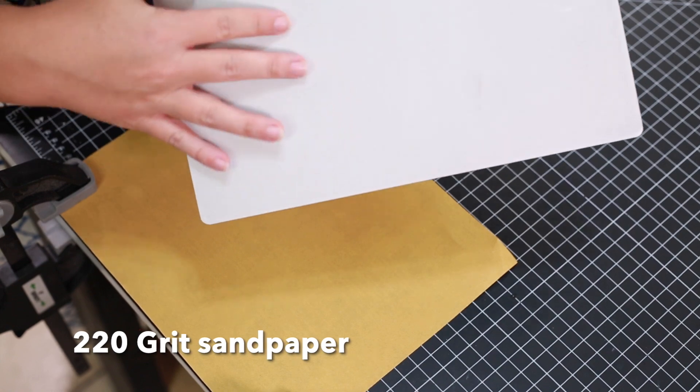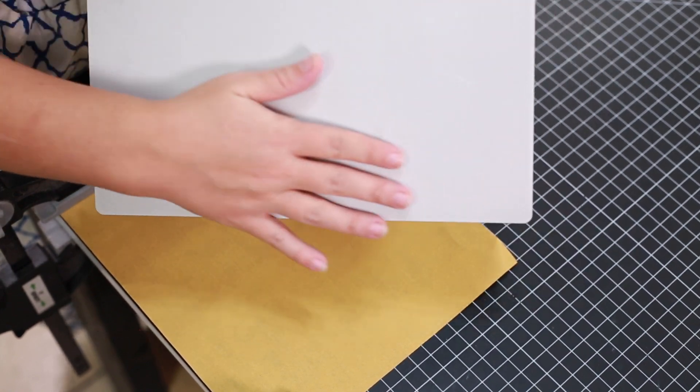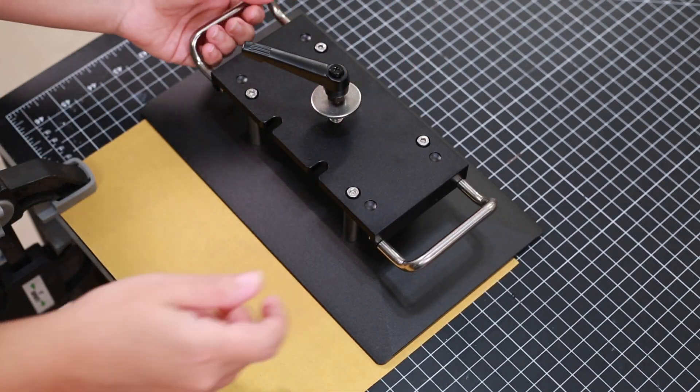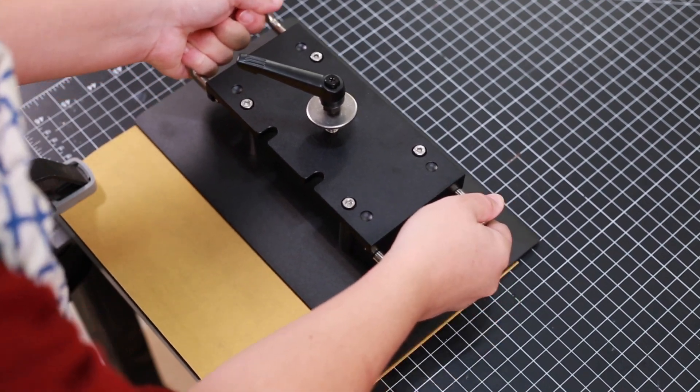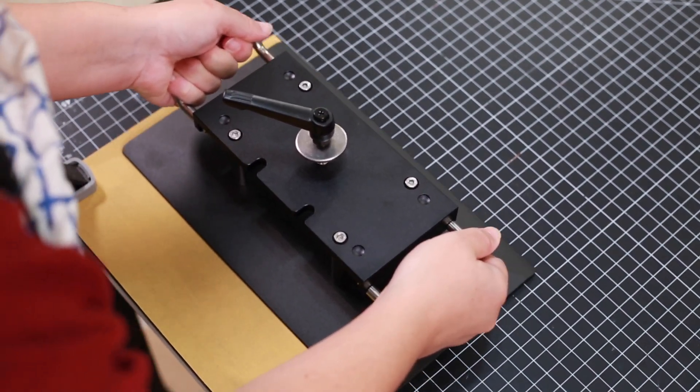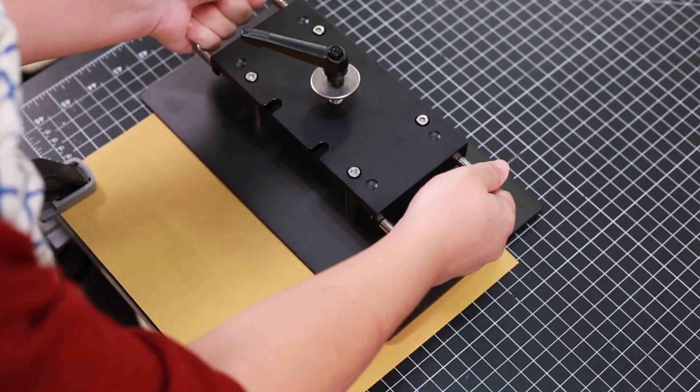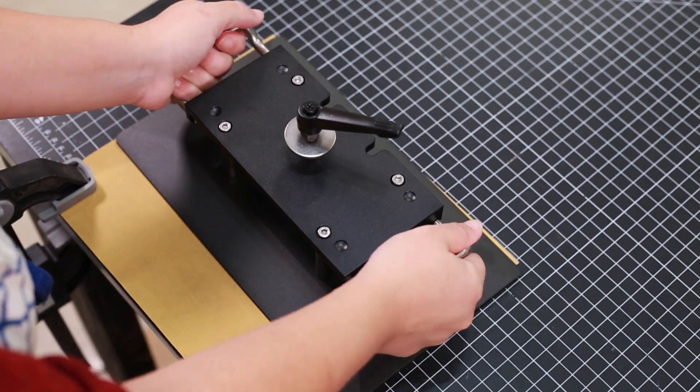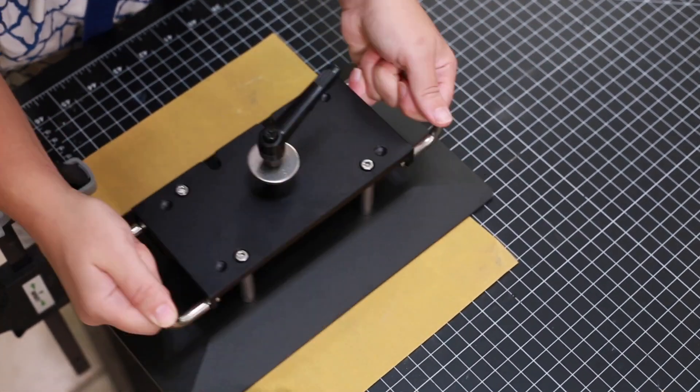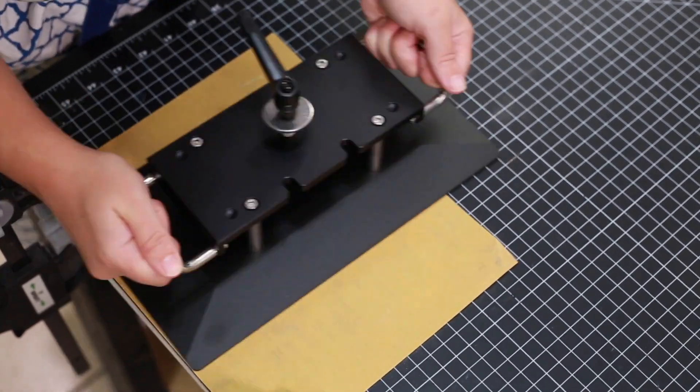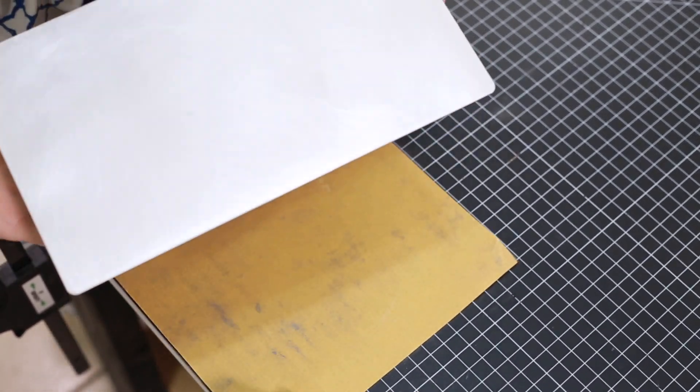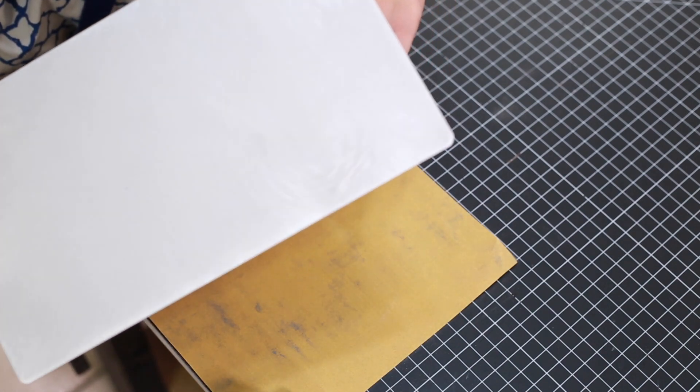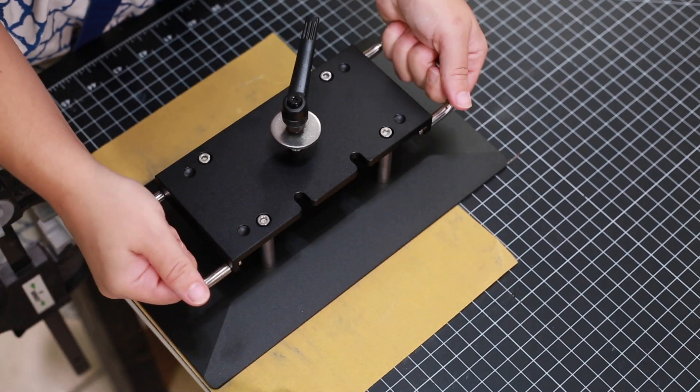So there's this texture on here you can see, and basically we're going to want to sand that off. It's really really shiny. So I'm just going to have it here and I'm just going to do little circles here. You can already see it's coming off and you can see the circular pattern here. You want to make sure to keep it pretty level.